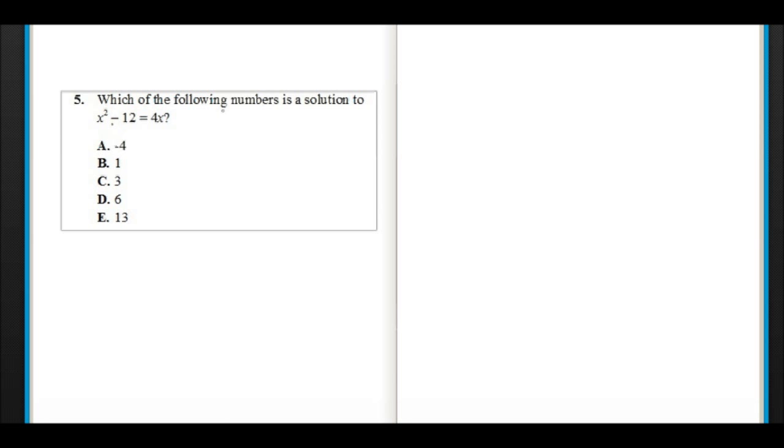Looks like some algebra, and there is a degree two term in this equation that we're looking at here. X squared, of course, so we're dealing with some exponents. Alright, let's read the question. Which of the following numbers is a solution to x² - 12 = 4x? Well, I'll write out the equation quickly. X squared minus 12 equals 4x.